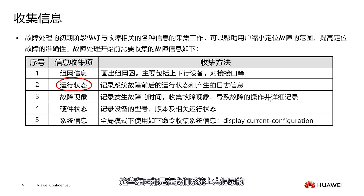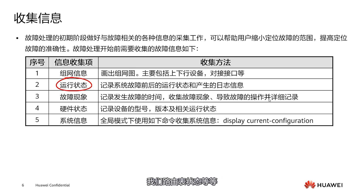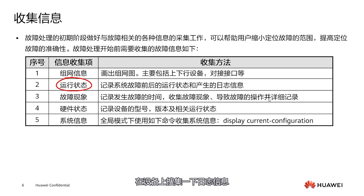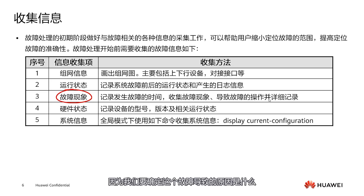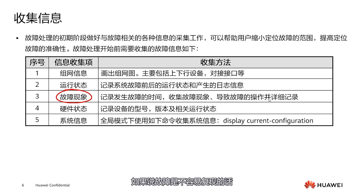The second aspect is the operational status. All this information is recorded in our system, meaning we need to check our equipment — like the trunk status and our routing table status, etc. This generates certain diagnostic information which we might need to gather on the equipment using commands. The third aspect is the fault phenomena: specifically what fault occurred, what the occurrence time was, and what actions we took before the fault happened, because we need to determine the cause. The fault phenomena need to be recorded in detail.